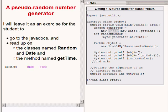The main method on the right of your screen instantiates a new object of the class named Random. I will explain this only briefly. Mainly, I will leave it as an exercise for the student to go to the Java documentation and read up on the classes named Random and Date and the method named gettime.